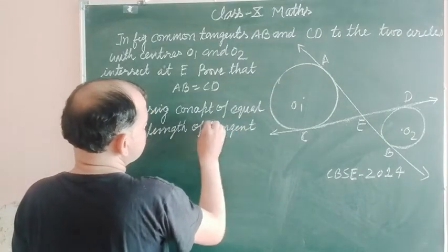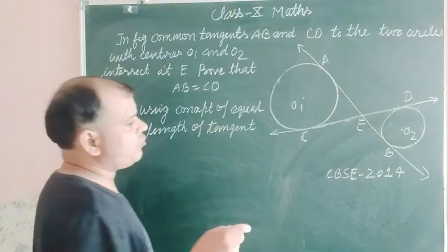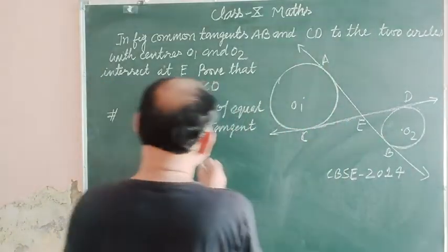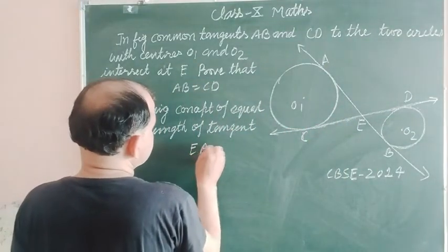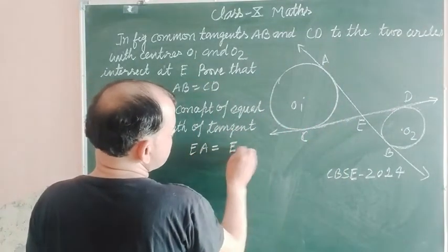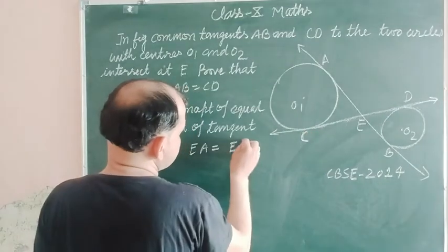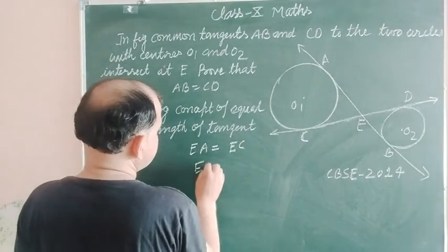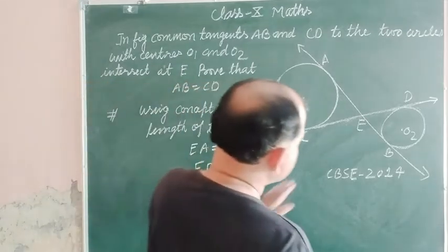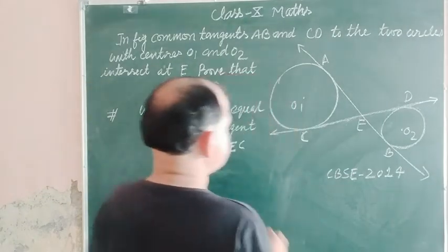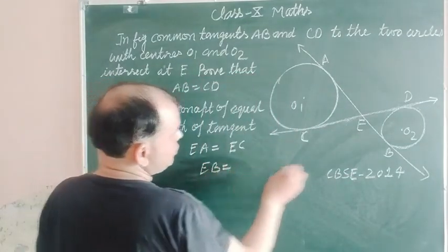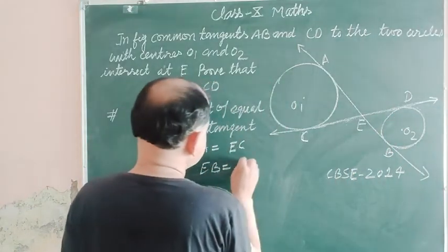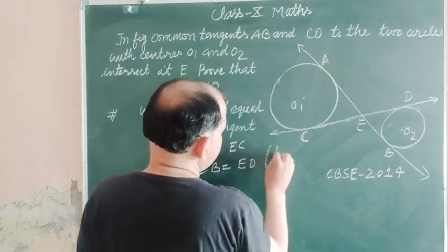From an external point, we take that EA equal to EC, and EB equal to ED by theorem.